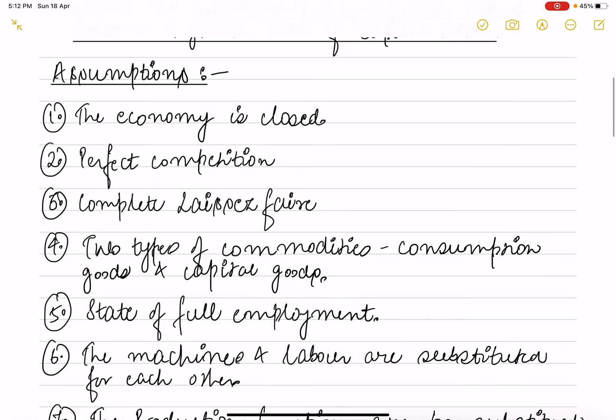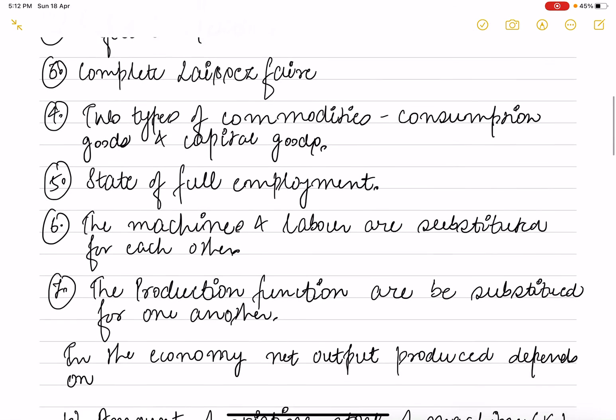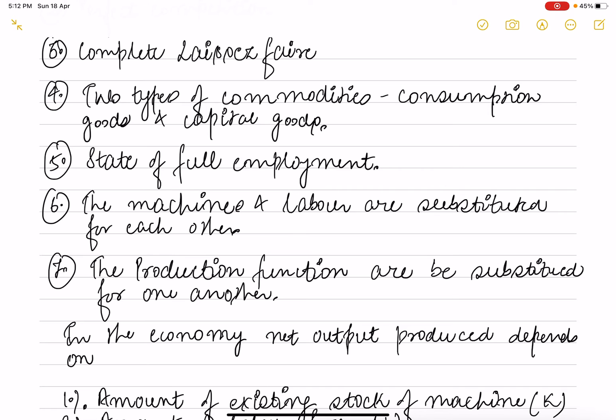There are few assumptions attached with this model. First, the economy is closed. Second, perfect competition. Third, complete laissez-faire, meaning no government intervention. Fourth, there are two types of commodities: consumption goods and capital goods. Fifth is the state of full employment.